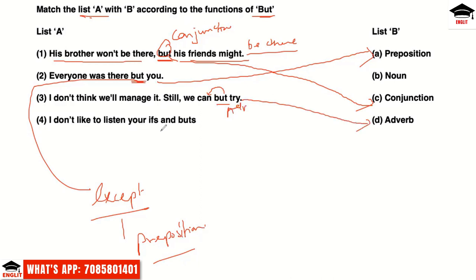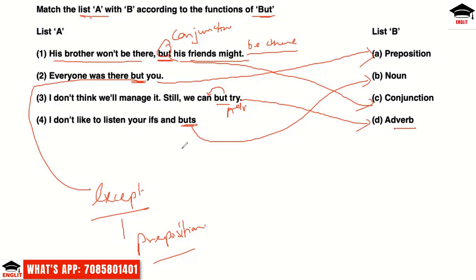Fourth example: 'I don't like to listen to your ifs and buts.' Here 'ifs and buts' — the plural form can only belong to a noun. If S or ES is added to any word and used that way, it becomes either a verb or a noun. So here 'but' is working as a noun in its plural form. In summary: first is conjunction, second is preposition, third is adverb, fourth is noun.